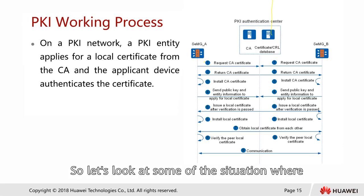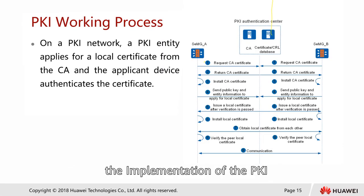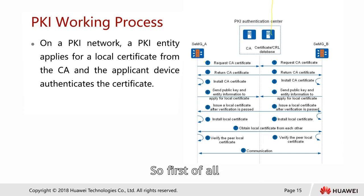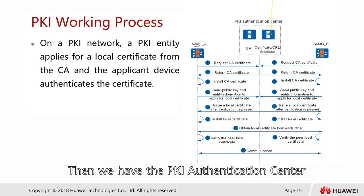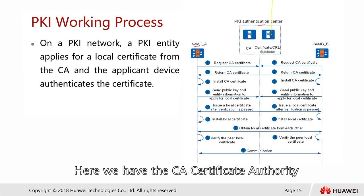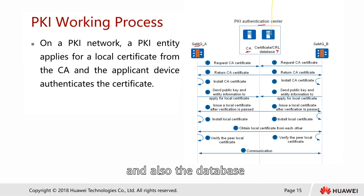Let's look at some of the situations where the implementation of the PKI. This is the PKI working process. First of all, we have two components here — for example, these are the two firewalls. And then we have the PKI authentication center. Here we have the CA, certificate authority, and also the database.